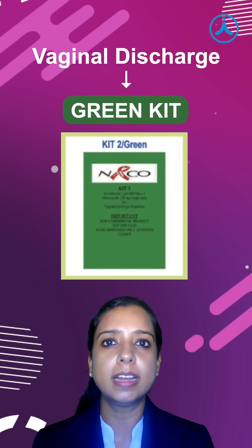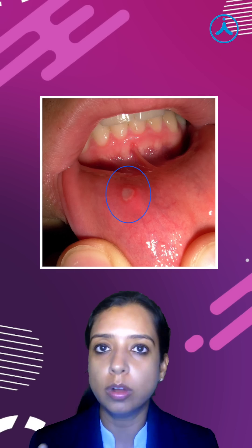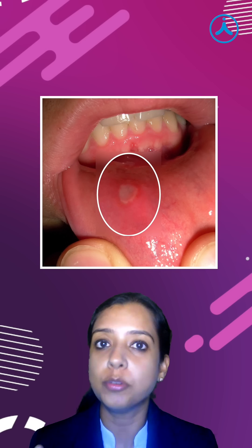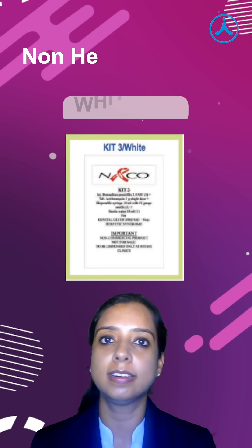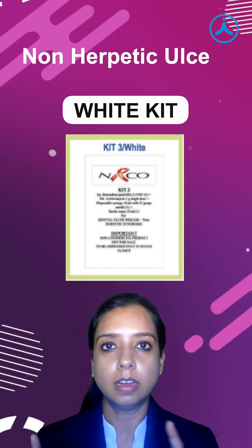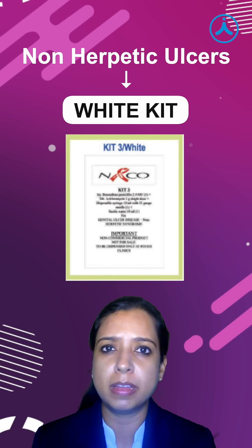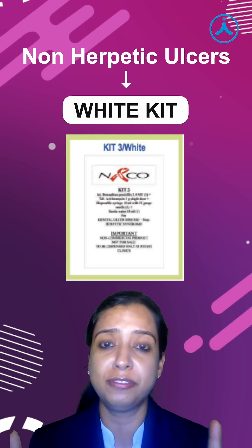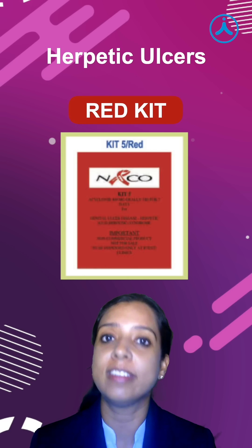Non-herpetic ulcer — remember small ulcers that tend to occur in your mouth are white. So, non-herpetic ulcers: white kit. Herpetic ulcers are very painful, angry, fierce. So for them, we have red kit.